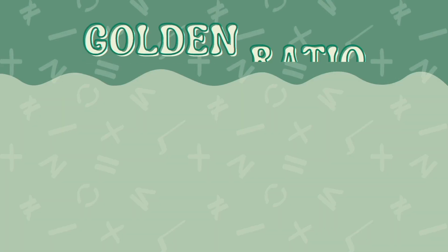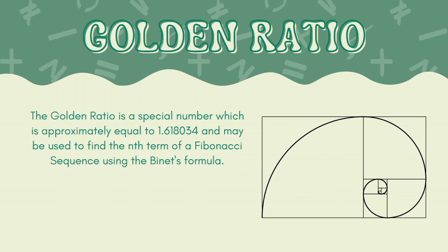We're also going to discuss the golden ratio. What is the golden ratio? The golden ratio is a special number which is approximately equal to 1.618034, and may be used to find the nth term of a Fibonacci sequence using the Binet's formula. This is the Binet's formula.